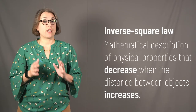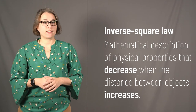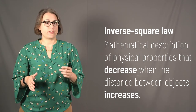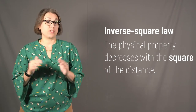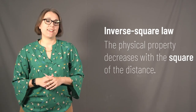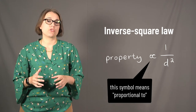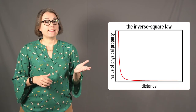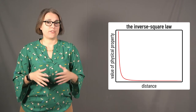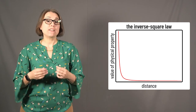The inverse square law describes physical properties that decrease when the distance between two objects — or the distance away from a single object — increases. The property and the distance are inversely related: as distance increases, the physical property decreases. Not only that, but the decrease occurs with distance squared, so any change in distance has a more powerful effect. Mathematically, a property is proportional to 1 divided by the distance squared. On a graph, when the distance doubles, the intensity of the physical property decreases by one quarter; when the distance is cut in half, the property increases by a factor of 4.